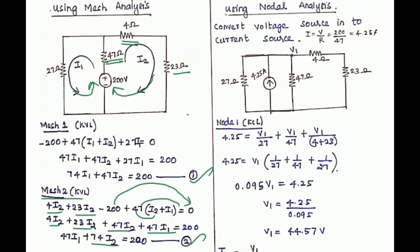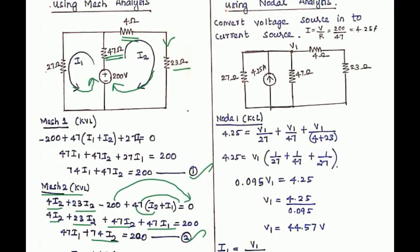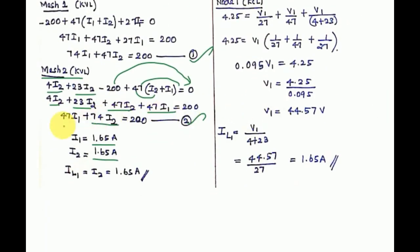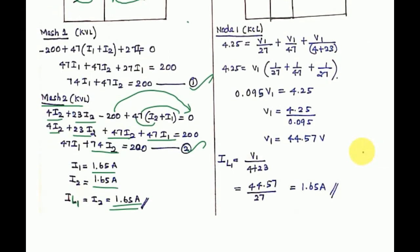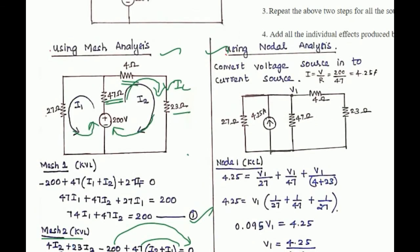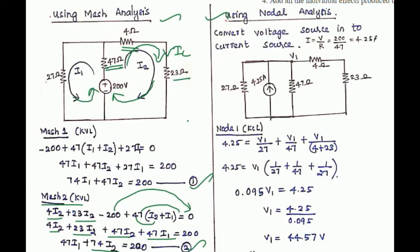So IL from the 200V source is i2 = 1.65A. Now for the current source circuit: convert the current source — the voltage value is 200V and the series resistance is 47 Ohm, giving 200/47 = 4.25 Ampere. The positive direction is upward, with 47 Ohm in parallel with the current source.